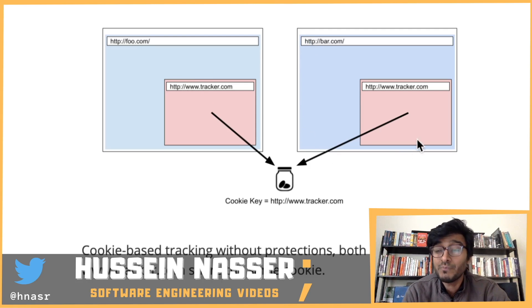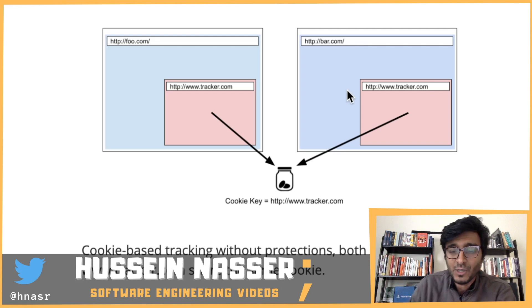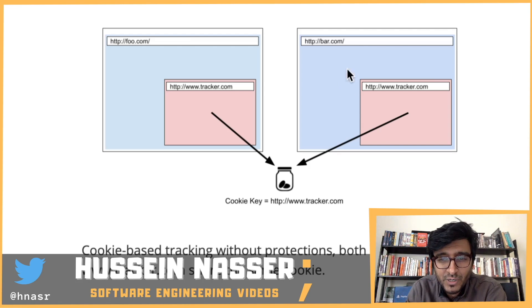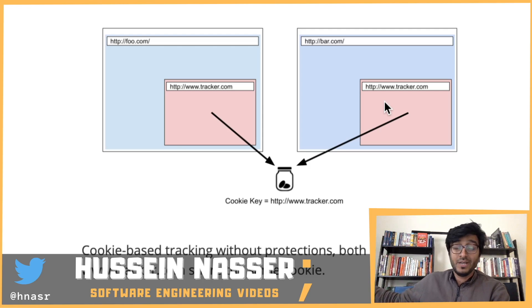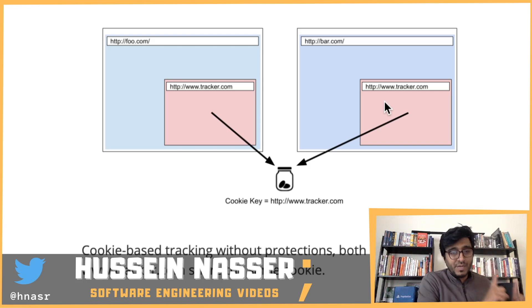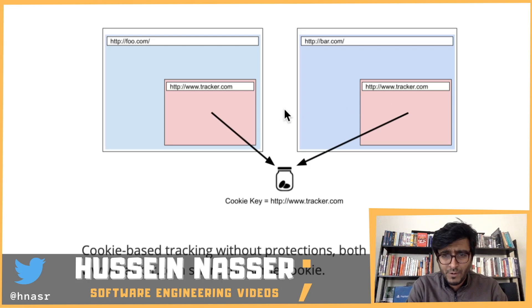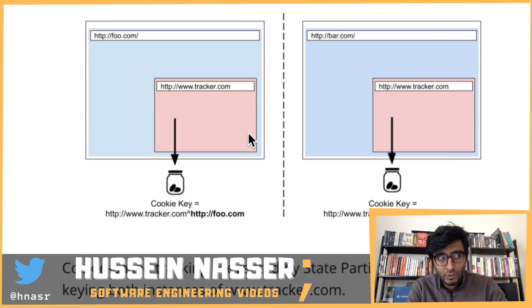Now you have a cookie for tracker.com that was set while visiting foo.com. When you go to bar.com, the browser still has that tracker.com cookie with your unique device ID. Bar.com sends a request to tracker.com, the browser sends along that cookie, and the tracker identifies that you visited both bar.com and foo.com — tracking you across sites.